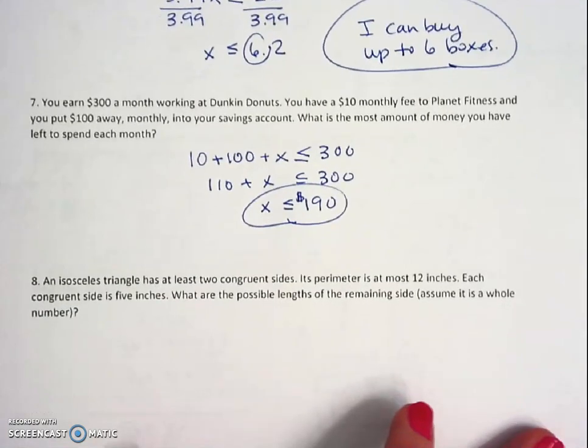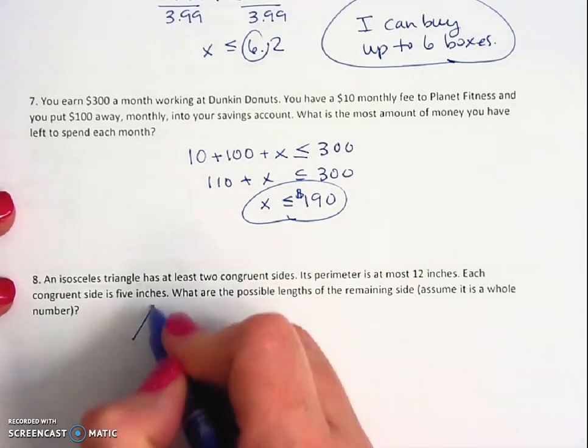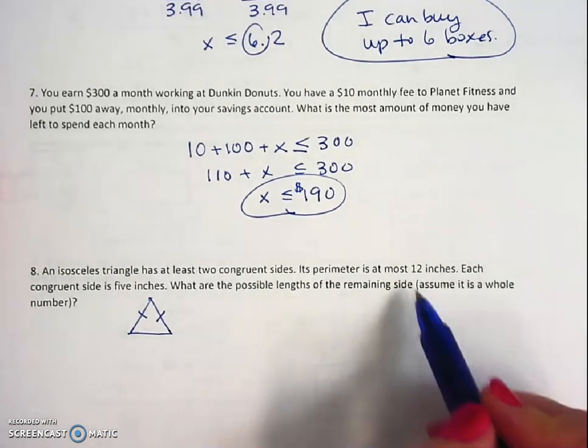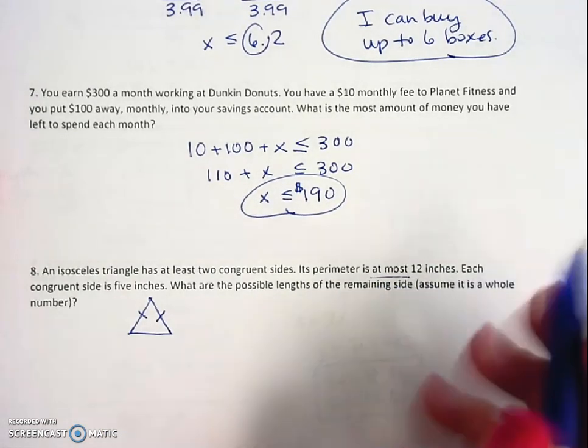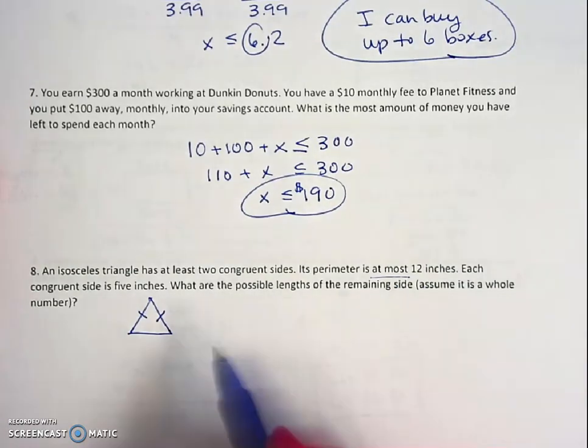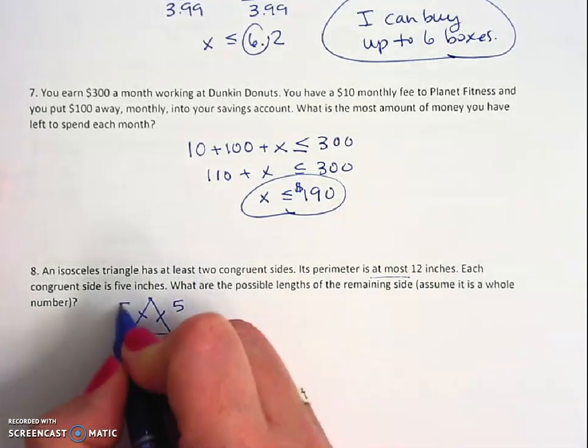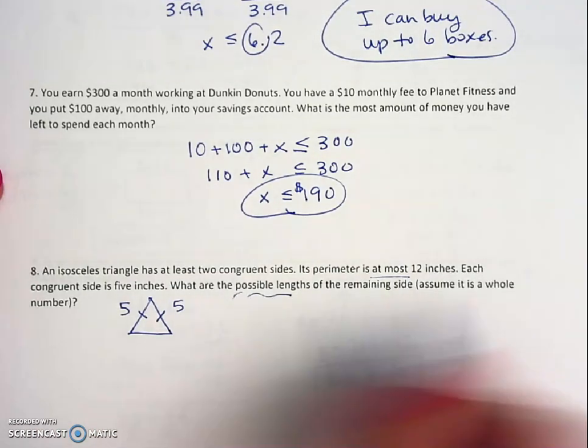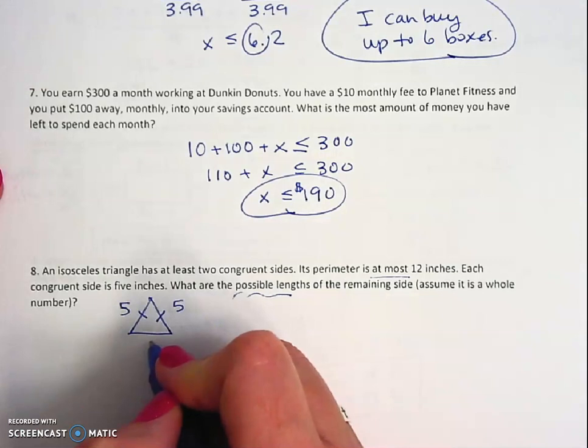And then for the last one, an isosceles triangle has at least two congruent sides. Its perimeter is at most 12. Each congruent side is 5 inches. What are the possible lengths of the remaining side? Assume it is a whole number. So this is what I'm looking to find—the remaining side.